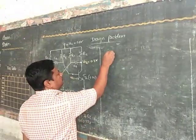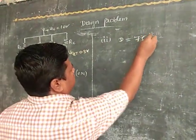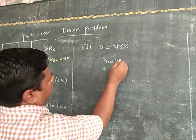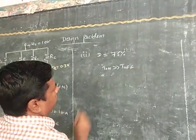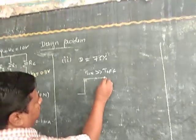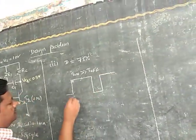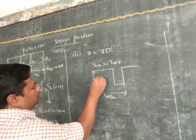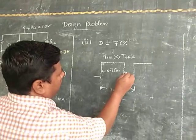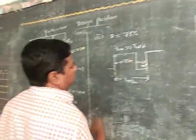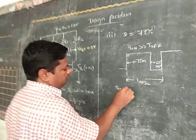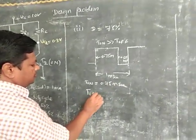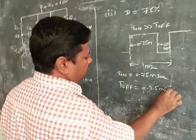Second case: duty cycle D is equal to 75%. That means T_on period is greater than T_off period. The total time period is 1 millisecond. If this T_on is 0.75 milliseconds and T_off is 0.25 milliseconds, then T_on is equal to 0.75 milliseconds and T_off is equal to 0.25 milliseconds.